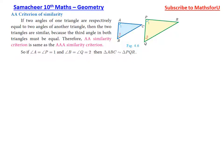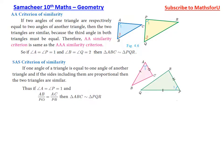This is the SAS criterion. SAS stands for Side-Angle-Side. The angle is equal and the corresponding sides on either side of that angle are proportional.